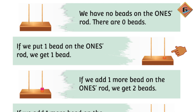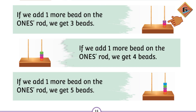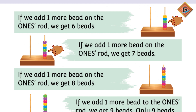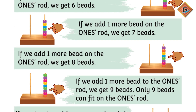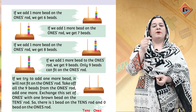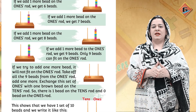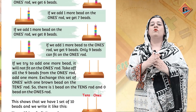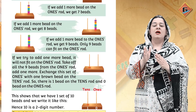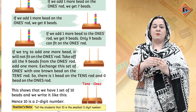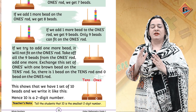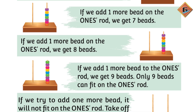Ab hum ek neeche bead add karte hain — that represents one. Ek aur — two. Then three, four, five, six, seven, eight, and nine. Ab note karo ke mazid iske upar ek bead daalne ki jagah nahi hai. Is taraf ko hum 'ones ki side' kehenge. Ek se ones — thik hai.